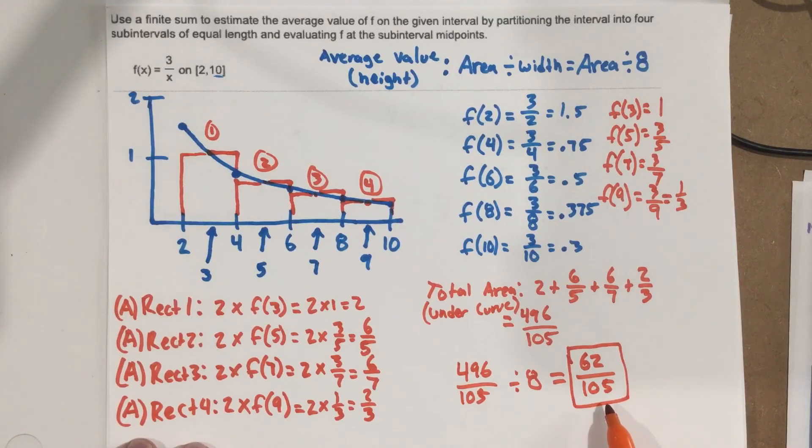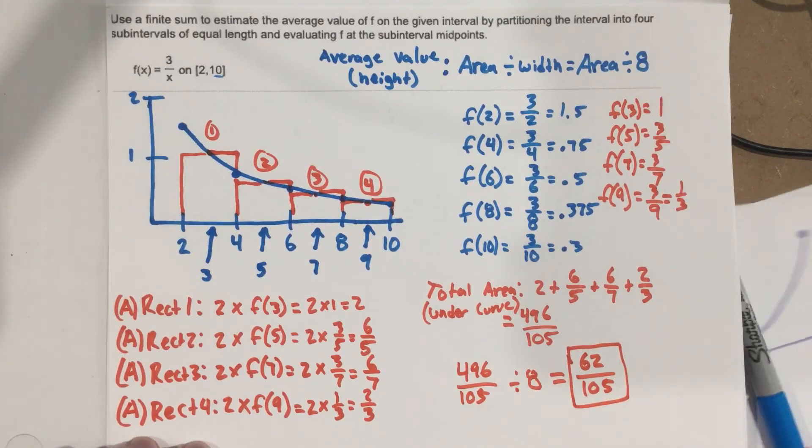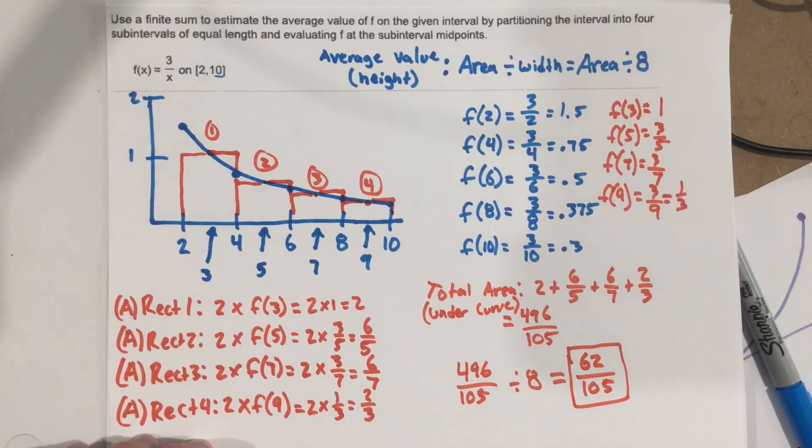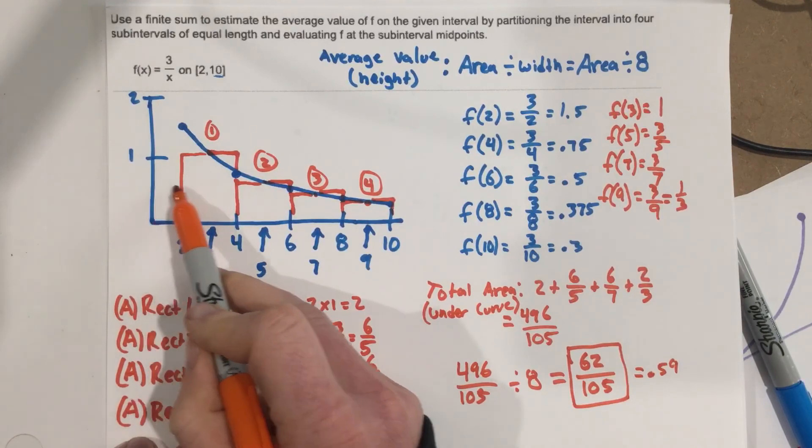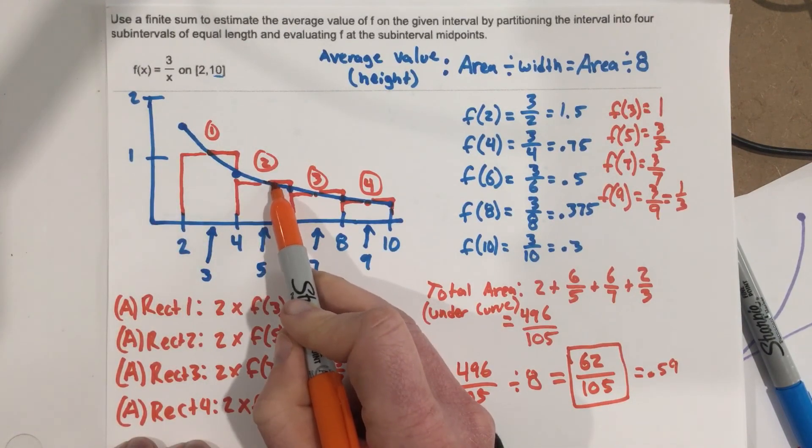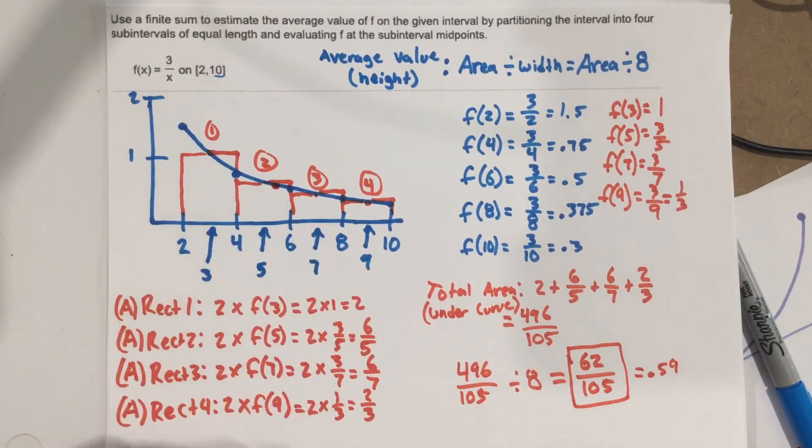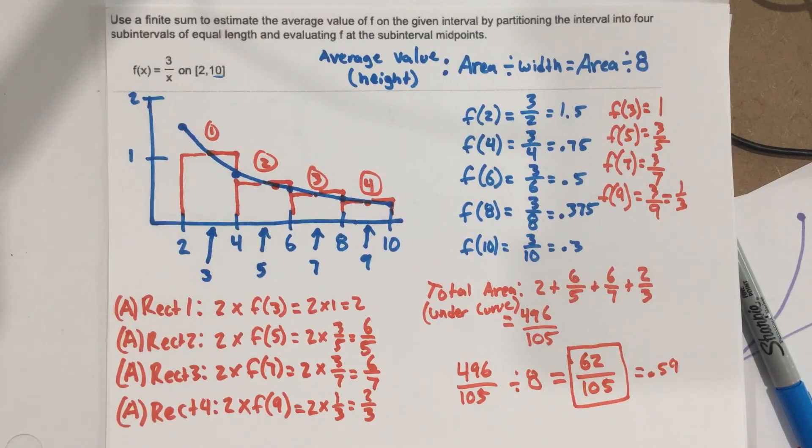And 62 over 105 is our average value of f for this function, or our average height. Let's estimate that. So 62 divided by 105, if I put that as a decimal, that'd be 0.59. Let's look where 0.59 would fall. 0.5 about right here, 0.59 a little higher. So about right in there. I would say that's somewhere in this region there would be our average height, which makes sense for the problem.